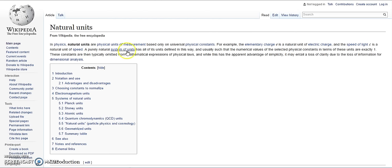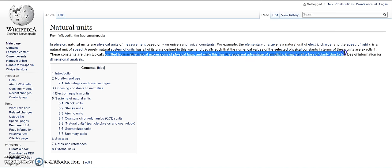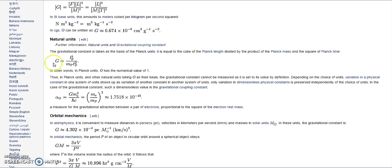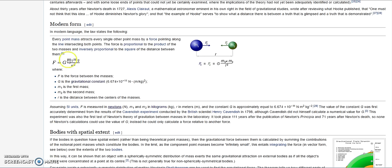We're talking about natural units here. And it says here, a purely natural system of units has all of its units defined in this way, and usually such that the numerical values of the selected physical constants in terms of these units are exactly 1. These constants are then typically omitted from the mathematical expression of physical laws. And while this has the apparent advantage of simplicity, it may entail a loss of clarity due to loss of information for dimensional analysis. It's another way of saying, well, it turns out it's omitted, basically. Like I said, this can be substituted as 1. So when we go into this equation here, if we multiply this by 1, you get the same number, which means it has been omitted.